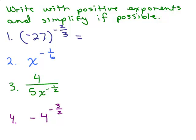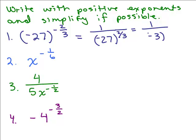For the first one, we have negative 27 to the negative 2 thirds power. The base is negative 27, and since we have a negative exponent, we write this as 1 over negative 27 to the positive 2 thirds. The cube root of negative 27 is negative 3, and then we square it: negative 3 times negative 3 is 9. So the answer is 1 over 9.